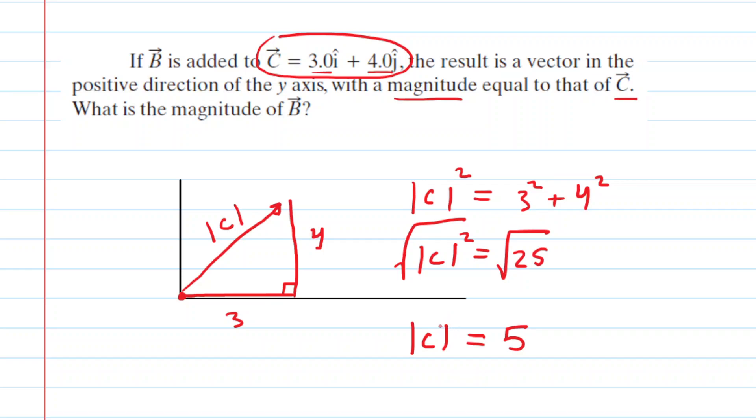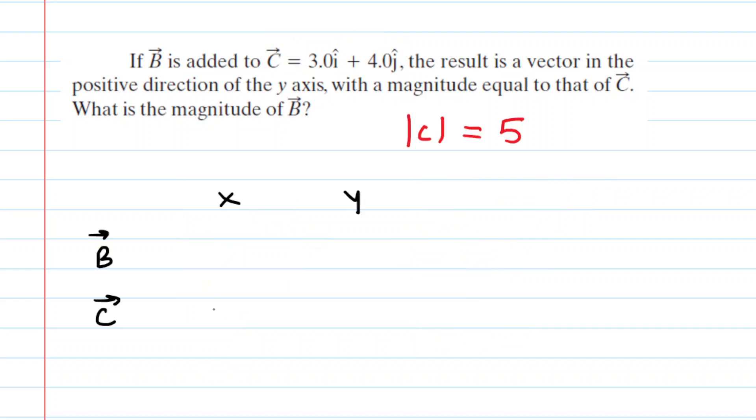Our next step is to set up a table showing the x and y components of vectors B and C. Now for vector C, once again we know the x and y components - they are respectively positive 3 and positive 4.